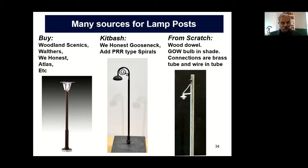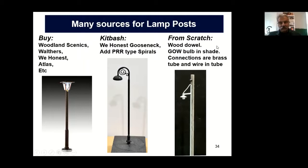You can kitbash lamps. This is a We Honest gooseneck going up like that. And yes, I model the Pennsylvania Railroad, so I added these PRR-type spirals which are characteristic of all the station lamps. I built a little plastic cylindrical form, wrapped 28-gauge copper wire around it, and soldered it in place on the lamp. It took one or two tries to figure out how to solder it on without burning out the wires going to the lamp, but that's another story.